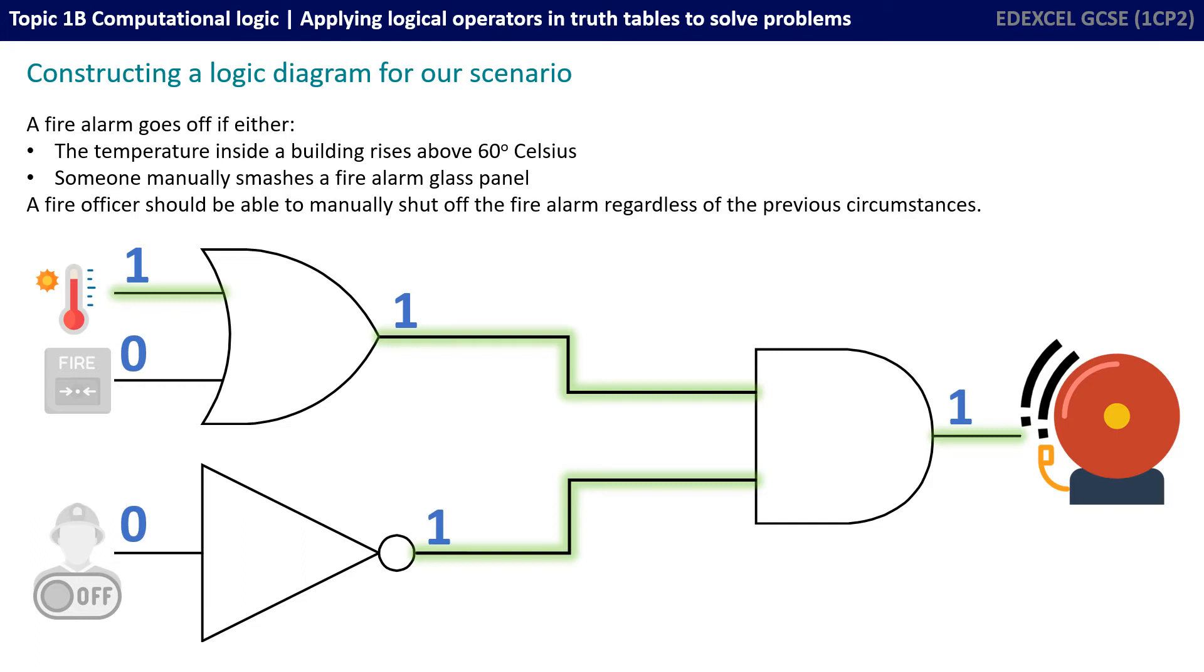This means the AND gate at the end is receiving two 1s and therefore outputs 1 and the fire alarm goes off.